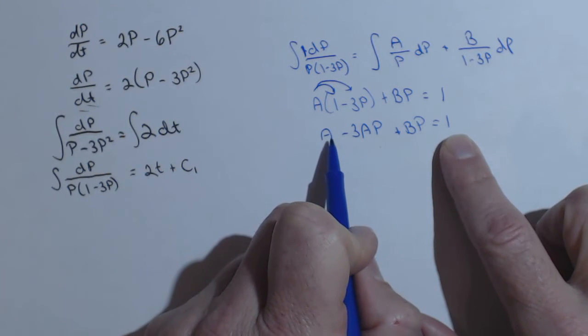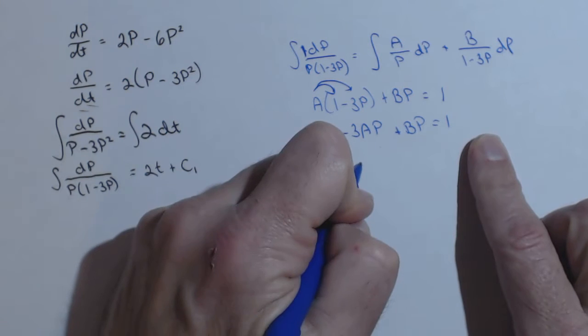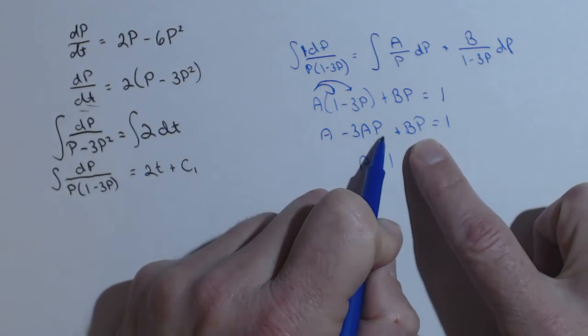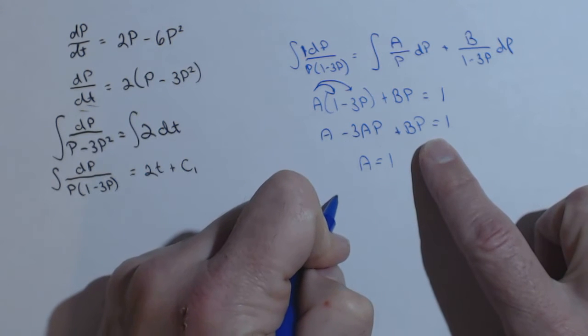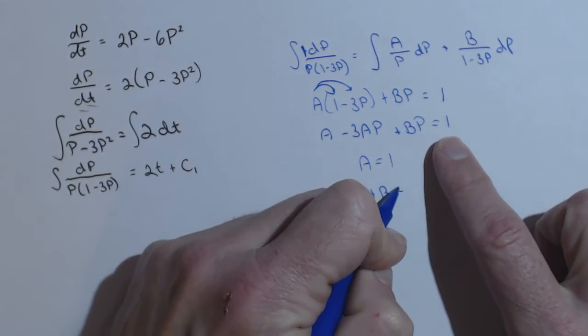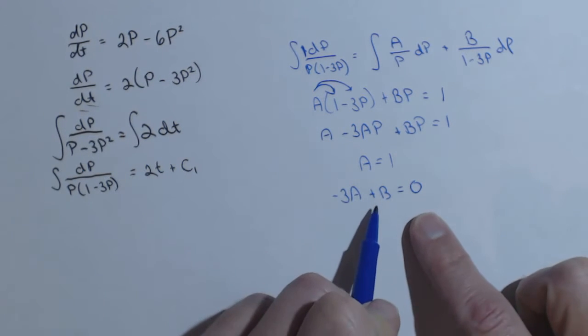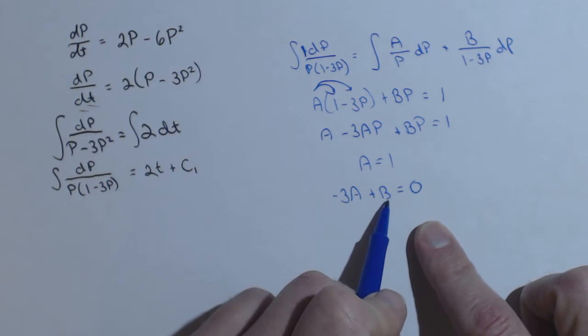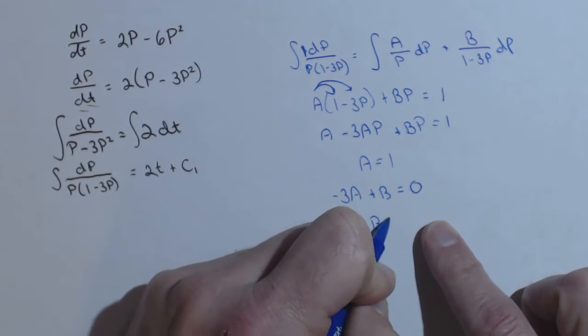Well, the only constant we have in here without a p is a. So automatically we already know a equals 1. And there are 0 p's, so we know that negative 3a plus b needs to add up to 0. And we know that a is 1, so this is negative 3, which means b has to equal 3.